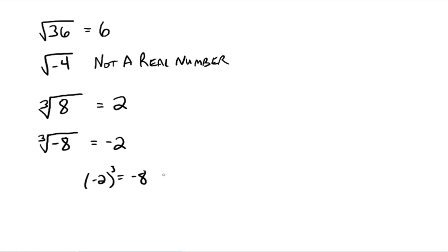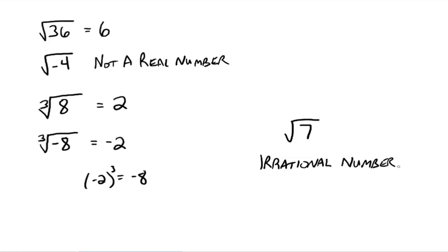But if the index is even, we want the radicand to be a positive number, otherwise we have something called not a real number. The square root of 36 is 6, cube root of 8 is 2, cube root of negative 8 is negative 2 — these are all rational numbers. Something like the square root of 7 is called an irrational number. Together, rational and irrational numbers make up the real number system. Irrational numbers include pi, the square root of 7, square root of 2 — anything that doesn't give a nice integer. The square root of 29 is approximately 5.3852 — that's an approximation because it goes on forever.